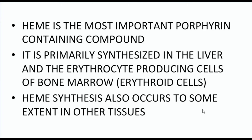Hemoglobin is made up of two parts: the proteinaceous part and the non-proteinaceous part. The proteinaceous part is the globin protein itself, and the non-protein part is the heme. Heme itself is composed of two parts: a porphyrin ring and a ferrous iron (Fe²⁺). That is why heme is very important.